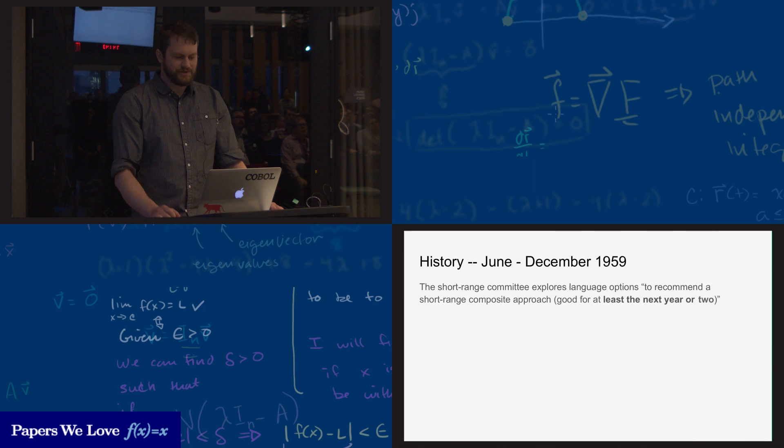June through December of 1959, the short-range committee explored language options to recommend a short-range composite approach that would guide the work of the larger committee for the next two years. So effectively, they were looking at the existing programming languages and trying to figure out a way to meld them together to have something that would get them through the next couple of years.